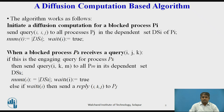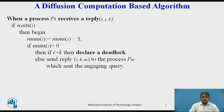The initiator of deadlock detection detects a deadlock when it receives a reply for every query it had sent out. The algorithm works as follows: initiate a diffusion computation for a blocked process Pi. When a blocked process Pk receives a query from i, j, k, and when a process Pk receives a reply i, j, k, then if i is equal to k it declares a deadlock, which means it was the one that sent the initiating query. In this algorithm, we assume that only one diffusion computation is initiated for the process.